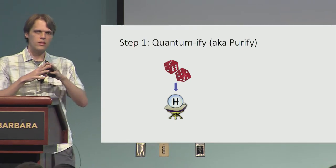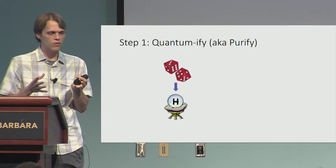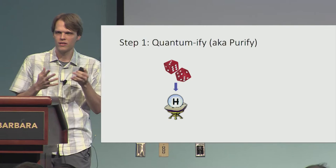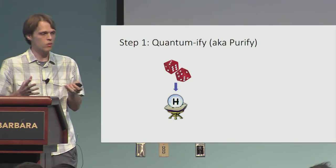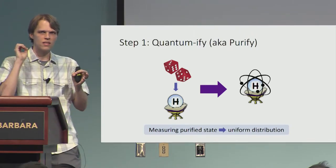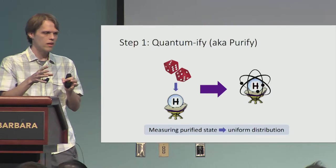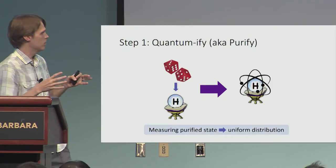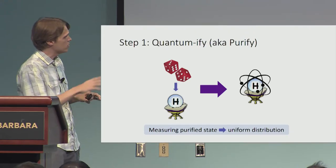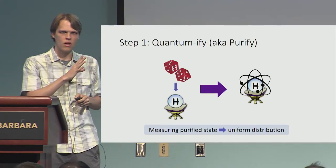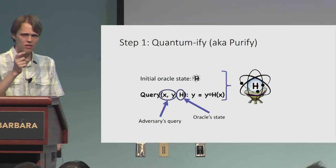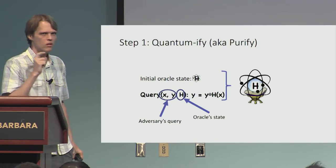The first step is we're going to take this uniform distribution over functions and do something called purification, which is really just turning this classical probability distribution into a quantum state. It's some quantum state such that if you try to peer inside it and measure it, you're going to recover the uniform distribution and destroy the quantum state. So this purification process can be thought of as sort of the opposite of quantum measurements.